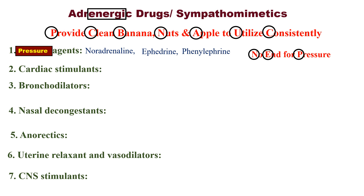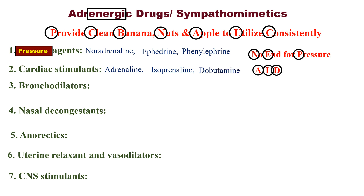Number two: Cardiac stimulants — these are the agents which stimulate the heart. When the heart stops functioning, we give some aid to stimulate it. Remember the mnemonic 'AID': A for Adrenaline, I for Isoprenaline, and D for Dobutamine.